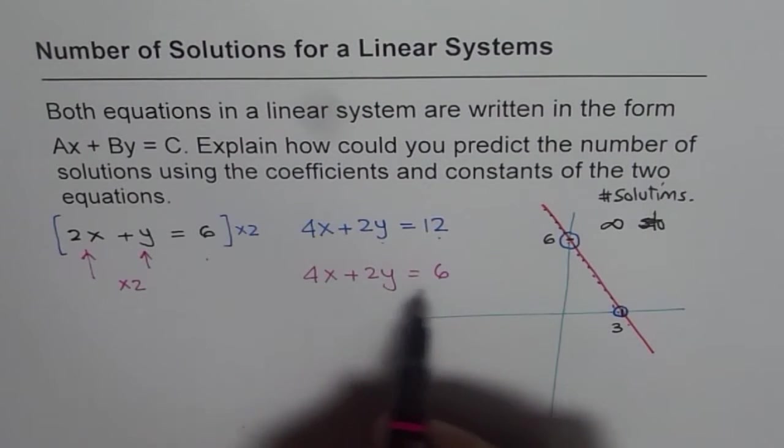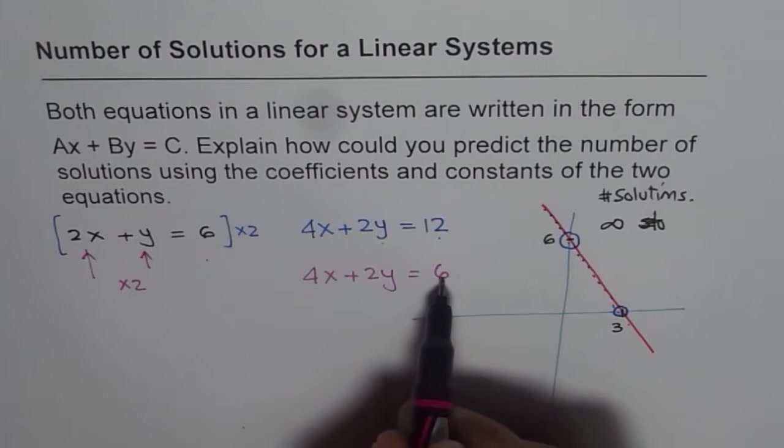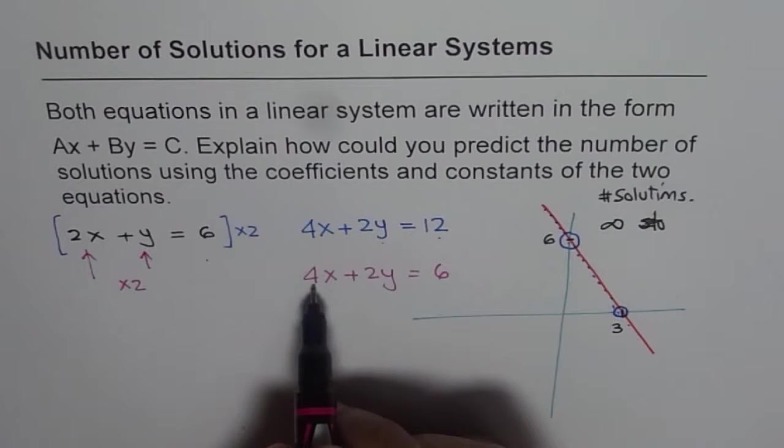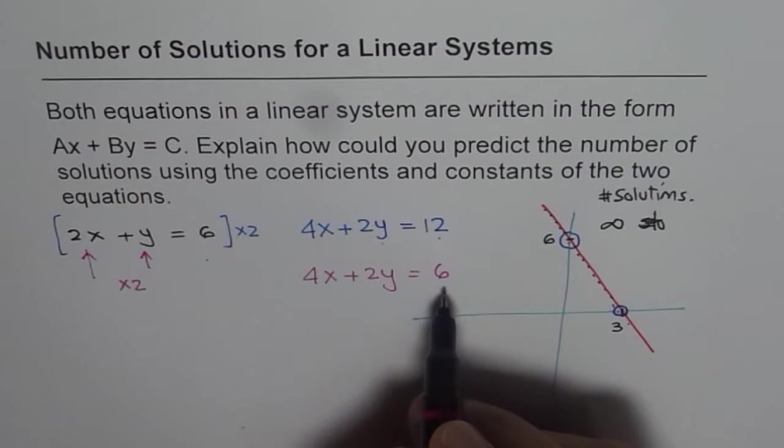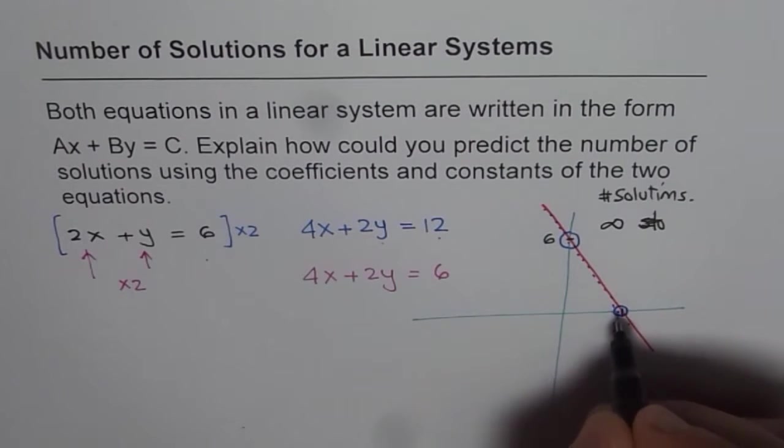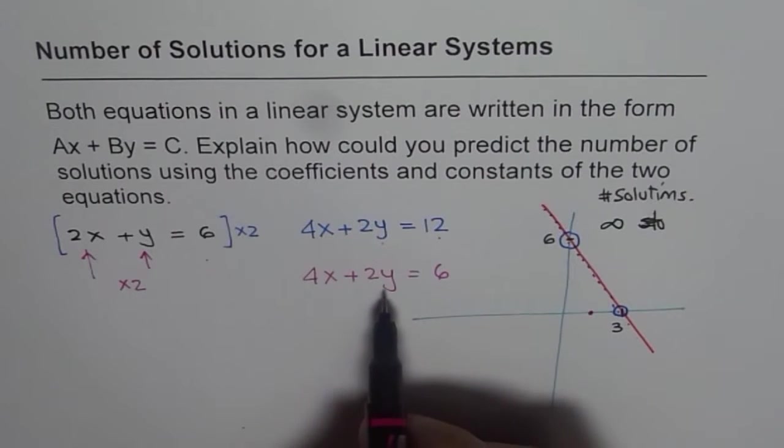In that case, what are X and Y intercepts? Now, X intercept will be, if Y is 0, 6 divided by 4 or 3 by 2, right? 3 by 2 is 1.5. So it is kind of here.